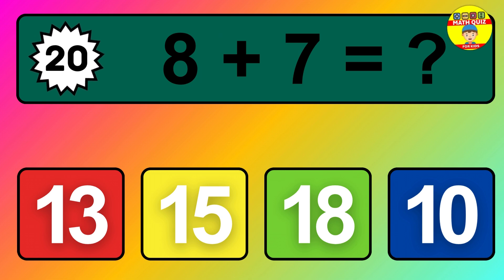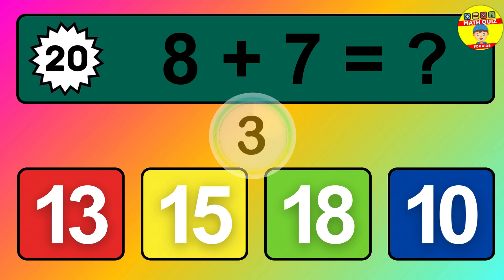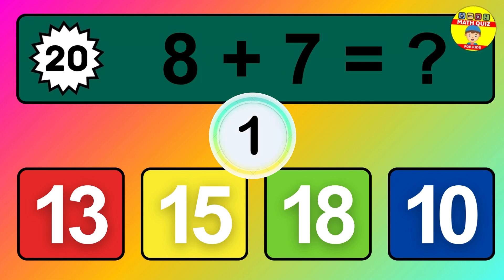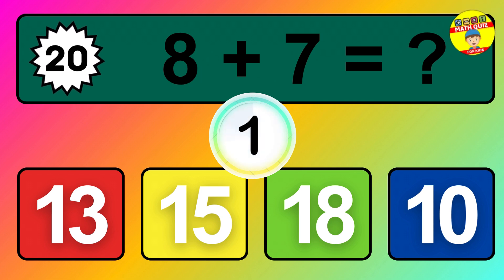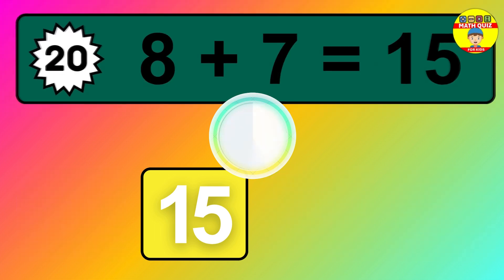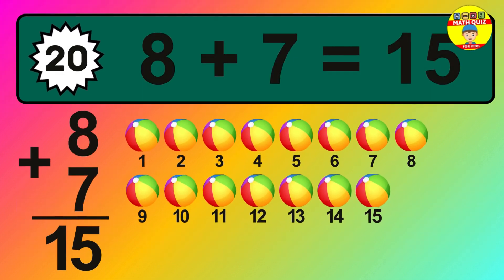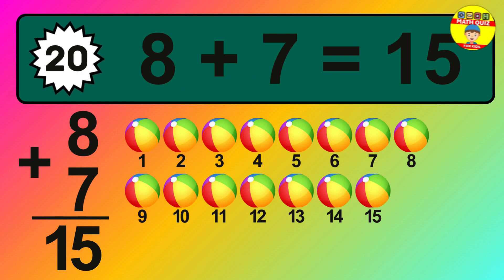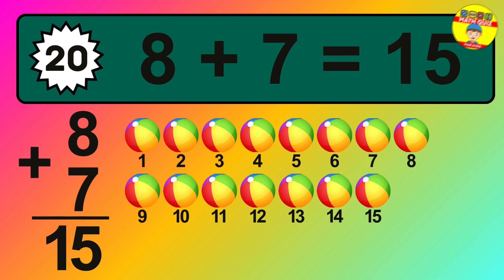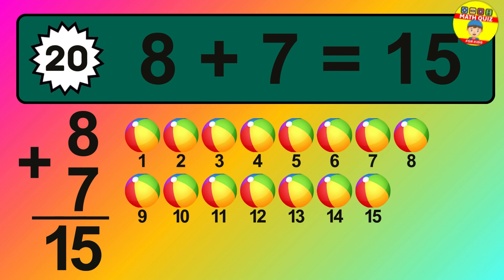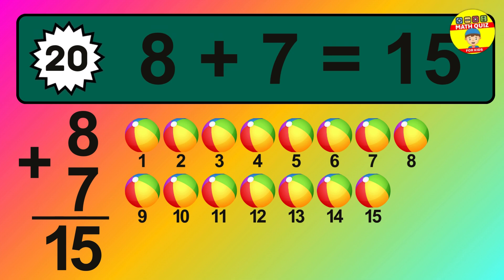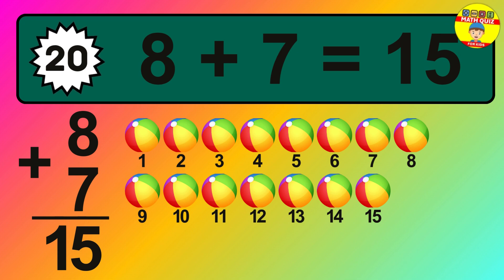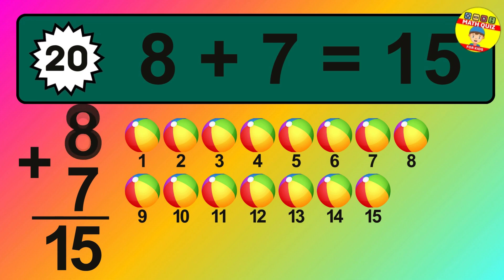Question 20. 8 plus 7 equals what? 1, 2, 3, 4, 5, 6, 7, 8, 9, 10, 11, 12, 13, 14, 15.